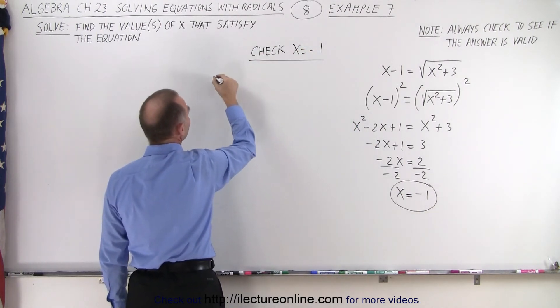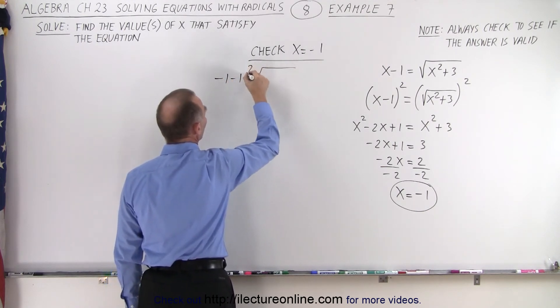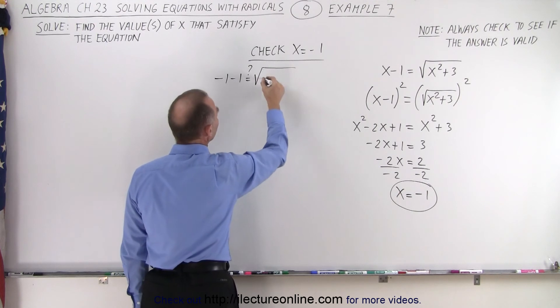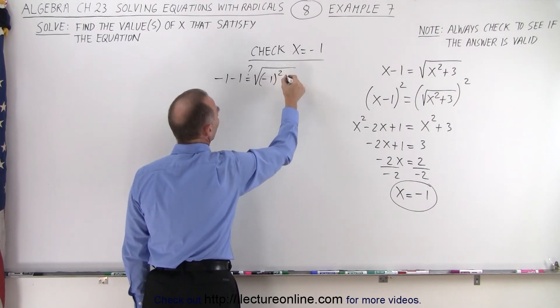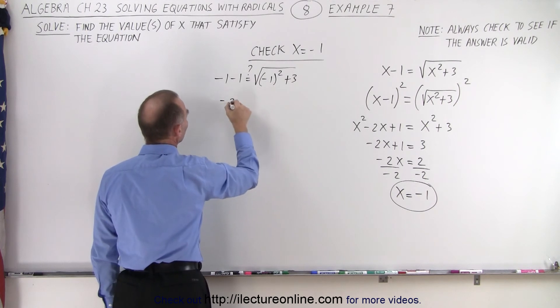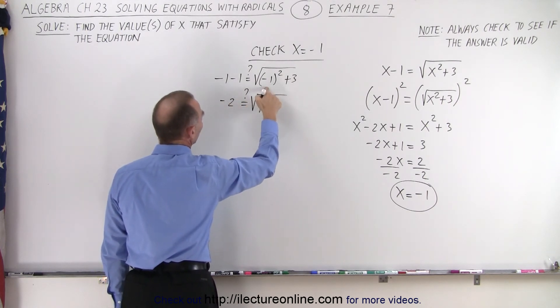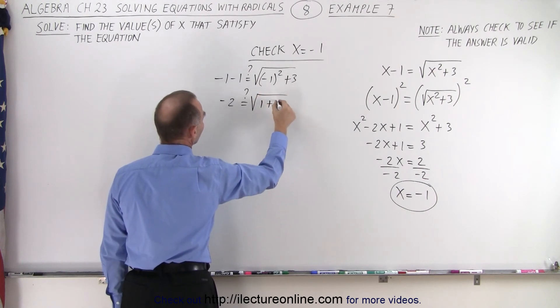On the left side, we end up with negative 1 minus 1 equals the square root, and we'll put a question mark because we don't know, negative 1 quantity squared plus 3. So, on the left side, we get negative 2 equals question mark the square root of negative 1 squared. Well, that's a positive one, so 1 plus 3.